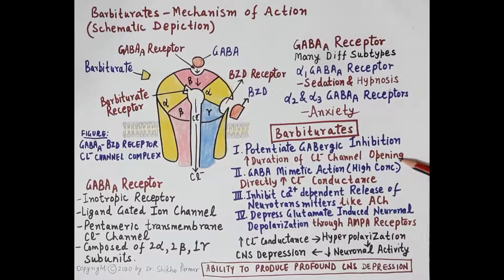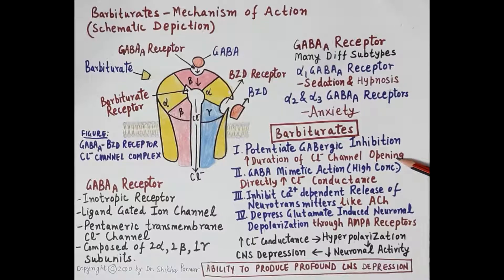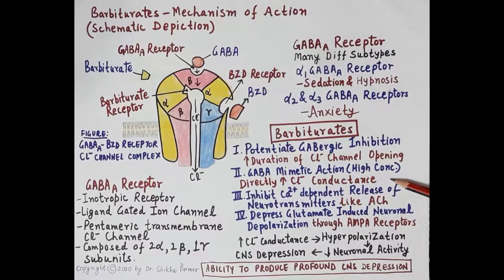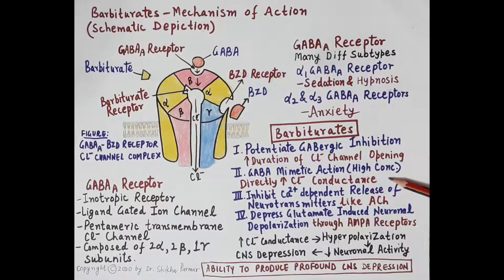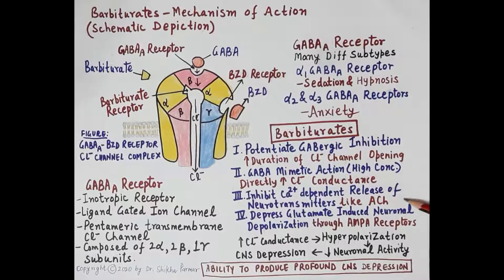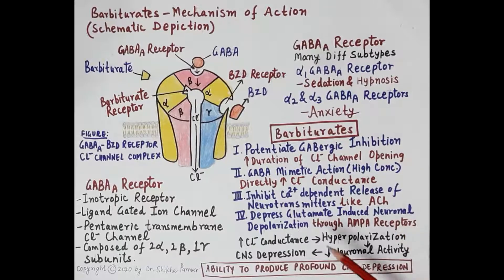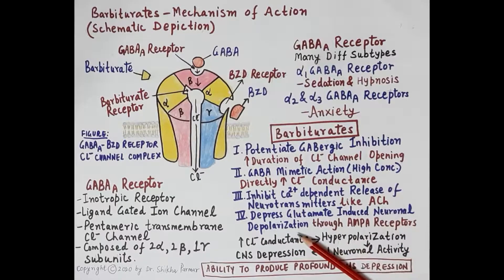Barbiturates potentiate GABAergic inhibition by increasing the duration of chloride channel opening, resulting in higher influx of chloride ions and greater hyperpolarization. At very high doses, barbiturates exhibit GABA-mimetic activity, directly increasing chloride conductance, which can result in coma. Barbiturates also inhibit calcium-dependent release of neurotransmitters like acetylcholine and depress glutamate — an excitatory neurotransmitter.